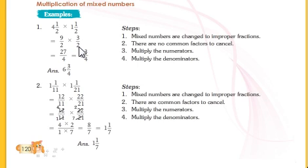Now we have converted this to improper fractions. Nine divided by two into three divided by two.